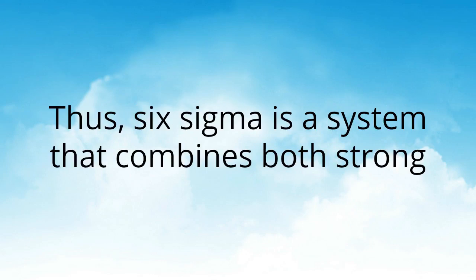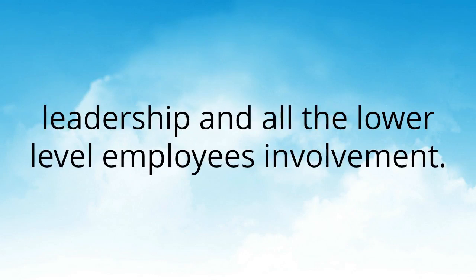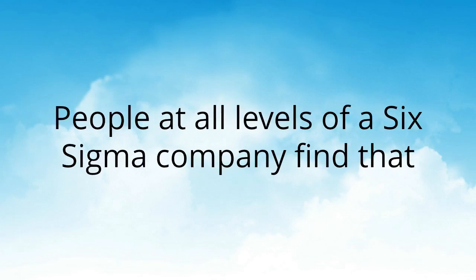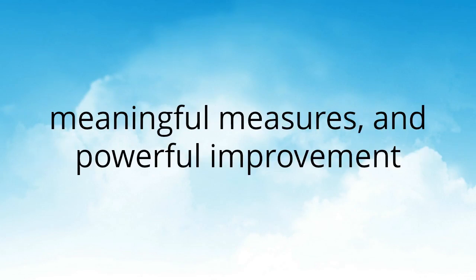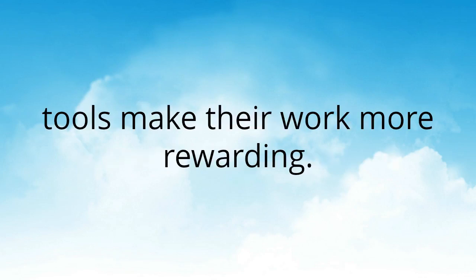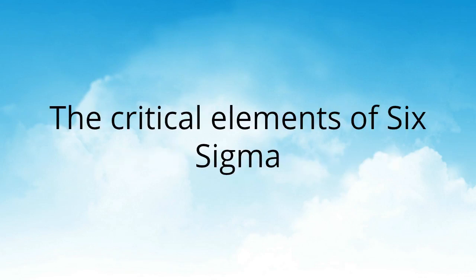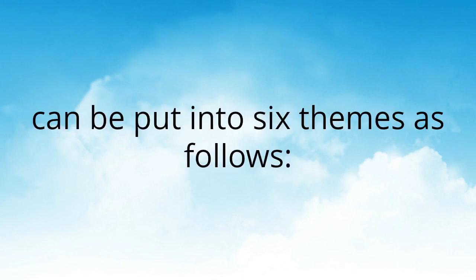Thus, Six Sigma is a system that combines both strong leadership and all the lower-level employees' involvement. People at all levels of Six Sigma companies find that better understanding of customers, clearer processes, meaningful measures, and powerful improvement tools make their work more rewarding. The critical elements of Six Sigma can be put into six themes as follows.